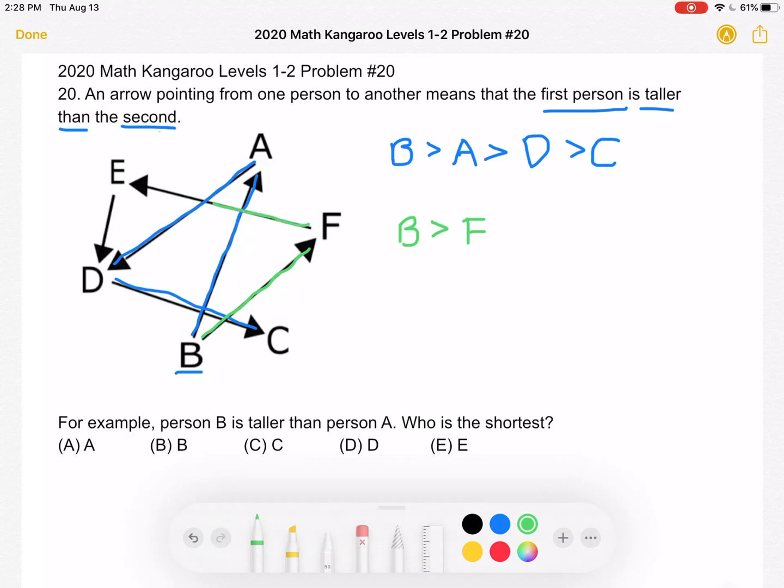An arrow going from F to E means that person F is taller than person E. An arrow going from E to D means that person E is taller than person D.